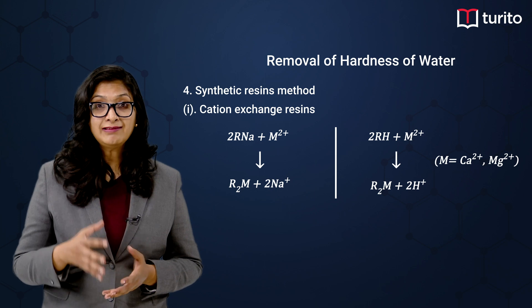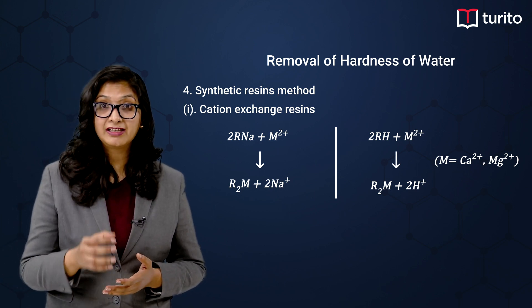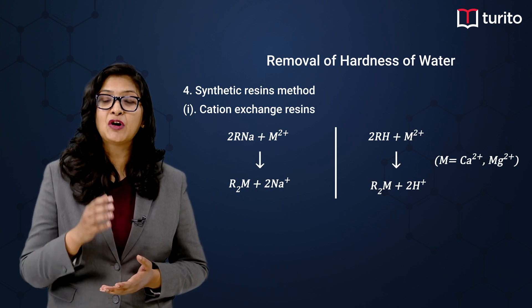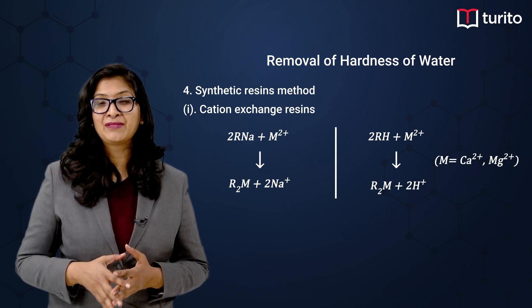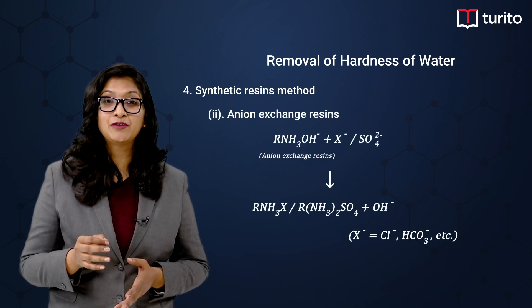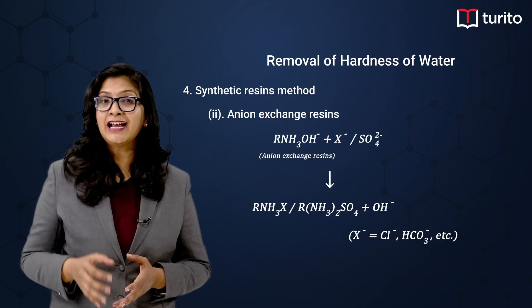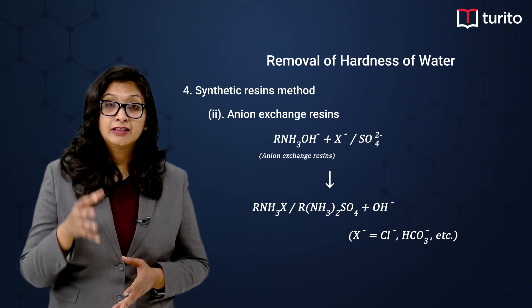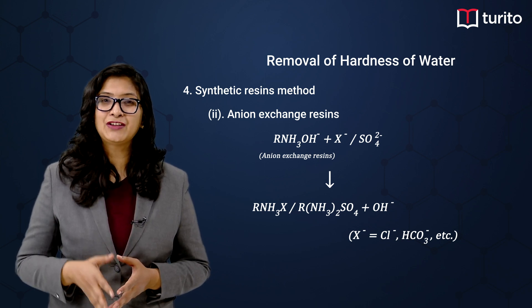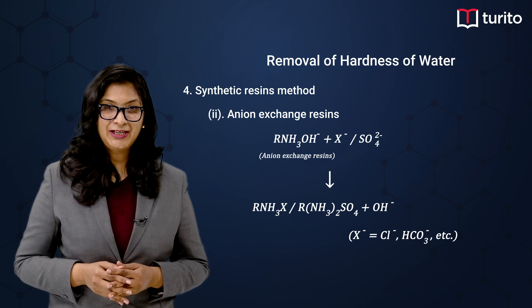In cationic exchange, the sodium or hydrogen present in the synthetic resin is replaced with calcium or magnesium. The next method is anionic exchange, in which the OH⁻ (hydroxide ion) will be replaced with the bicarbonate, chloride, or sulfate present in the particular hard water.